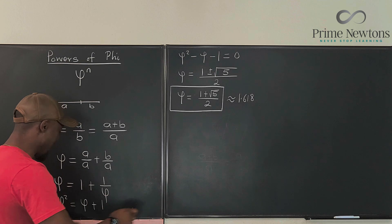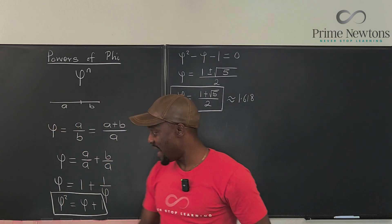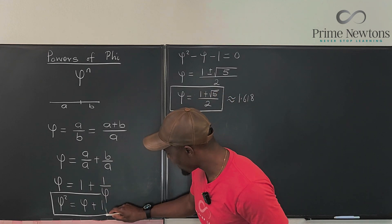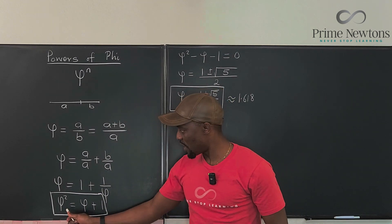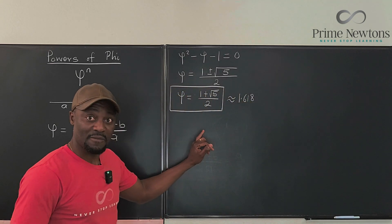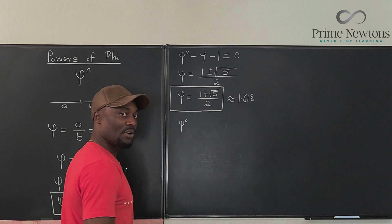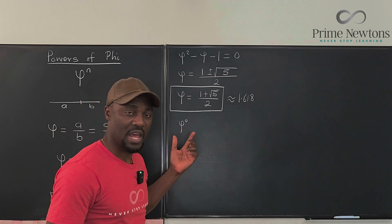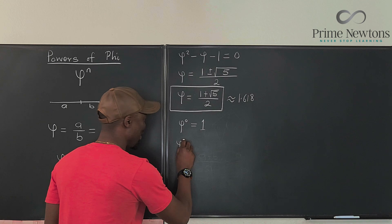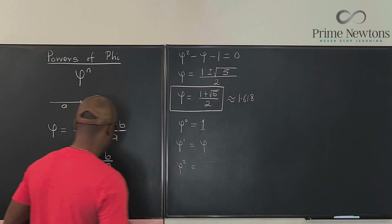Something important to remember that we're going to use: the square of phi is basically phi plus one. We got that directly from the definition. Now let's look at the powers of phi. Phi to the zero is 1. Phi to the one is just phi. Phi squared is phi plus one.